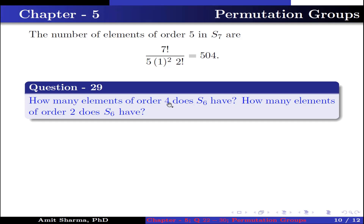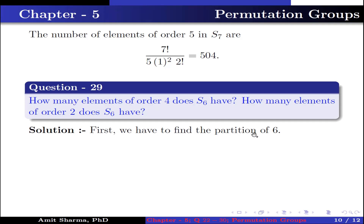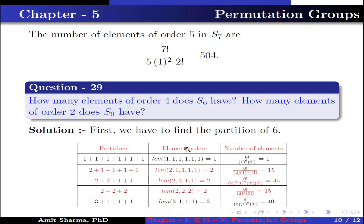Question number 29. How many elements of order 4 does S6 have? How many elements of order 2 does S6 have? We first find the partitions of 6. The partition 2 + 1 + 1 + 1 + 1 has LCM 2, giving elements of order 2: 6! ÷ (2 · 1⁴ · 1! · 4!) = 15. The partition 2 + 2 + 1 + 1 has LCM 2, also giving order-2 elements: 6! ÷ (2² · 1² · 2! · 2!) = 45. The partition 2 + 2 + 2 has LCM 2: 6! ÷ (2³ · 3!) = 15.